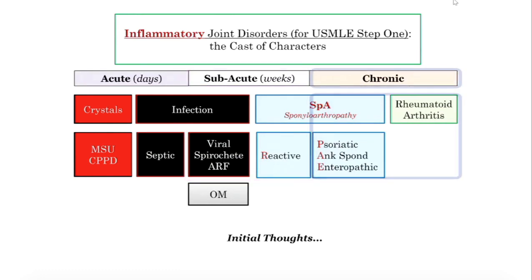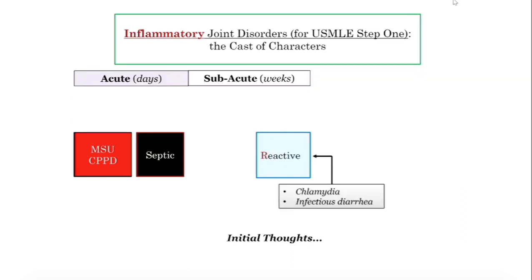And then we get into chronic: psoriatic, ankylosing spondylitis, enteropathic — these are chronic disorders. Rheumatoid by definition is a chronic disorder. When you use the phrase reactive, we're really talking about post-infectious: chlamydia infection, urethritis — can't see, pee, etc. — or infectious diarrhea such as Campylobacter or Shigella. You get infected with those, and then seven to fourteen days later the patient is presenting with some joint manifestation. Subacute, a little bit later, not acute.